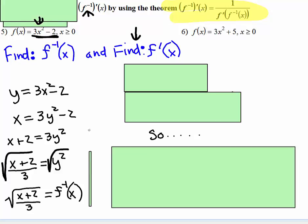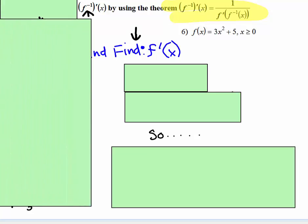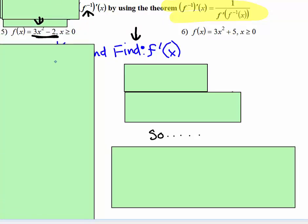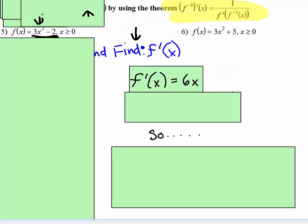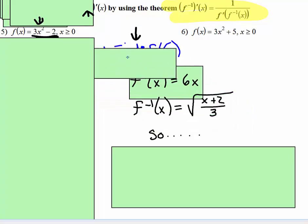Alright, so I'm going to do that, and I'm just going to cover that back up, so we're not distracted by all that information. Then we're going to find the derivative of this. Well, the derivative of 3x squared is 6x, and the derivative of a constant is 0, so the derivative of f of x is just 6x, and the inverse, we already determined, is the square root of x plus 2 over 3.